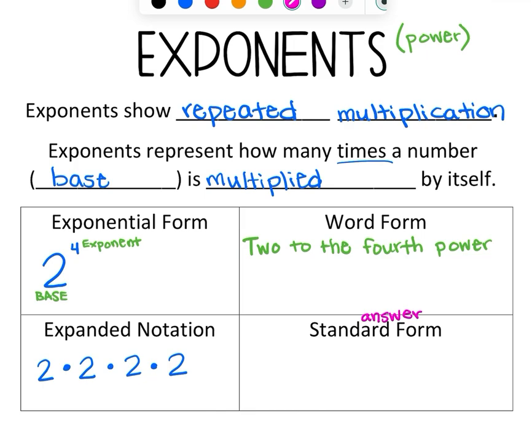So to get the answer, some people try to go 2, 4, 6, 8. That is not how we solve exponents. So I'm going to rewrite my expanded form. Do not do this in your head. So I have 2 times 2 times 2 times 2.